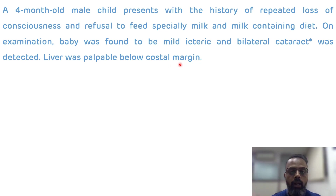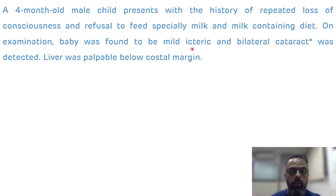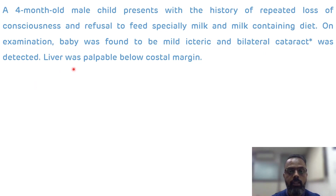From the description, the key hints are refusal to feed especially milk and milk-containing diet. On examination, the baby was having jaundice, there is bilateral cataract, and liver was palpable — that means there is hepatomegaly.